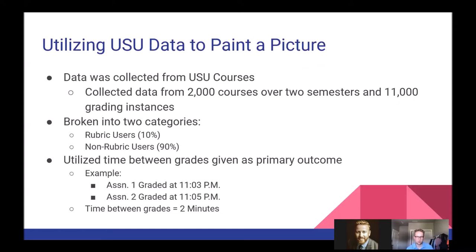We collected over 2,000 courses over two semesters and 11,000 grading instances — a grading instance being when an instructor types in a grade for a given assignment for a specific student and then posts that grade. We broke the data into two categories: rubric users and non-rubric users. Right off the bat we found something quite interesting: only about 10 percent of total grading instances fall under instructors who use rubrics, and 90 percent are non-rubric users. The key factor we were looking at was time between grades.